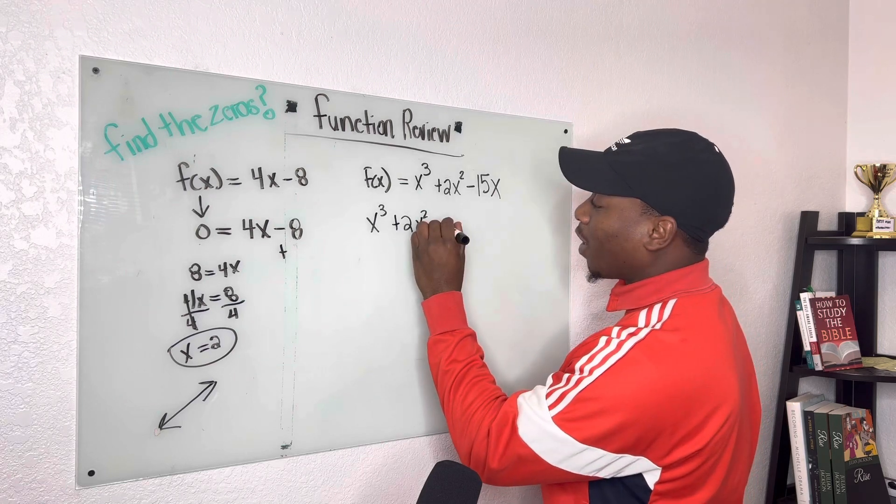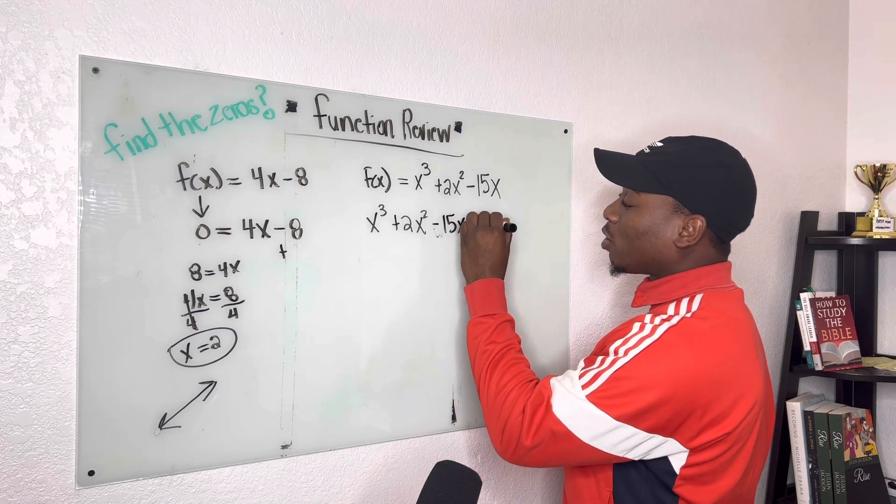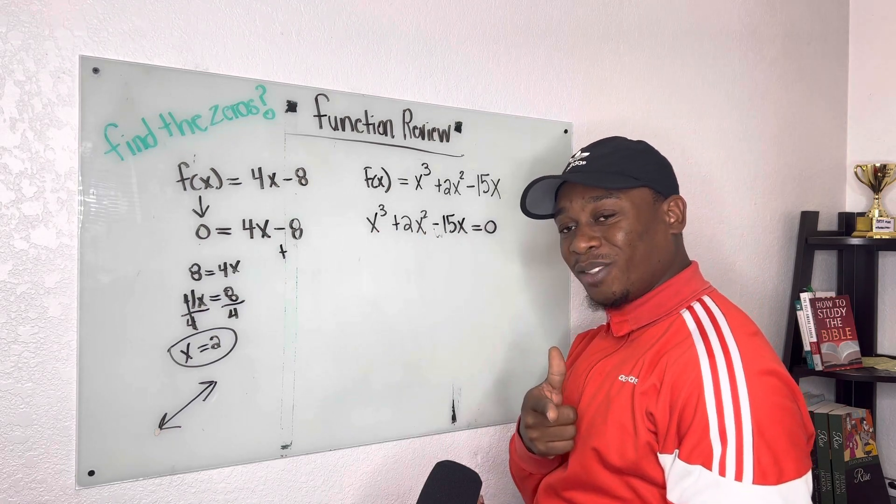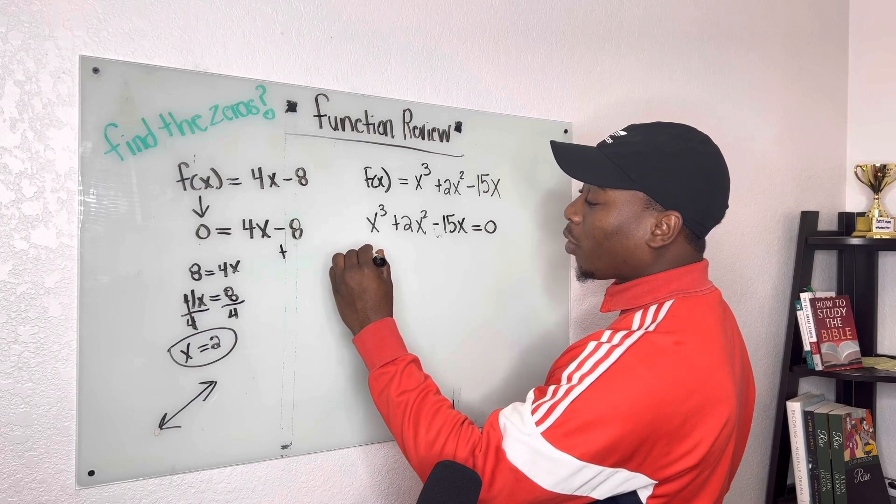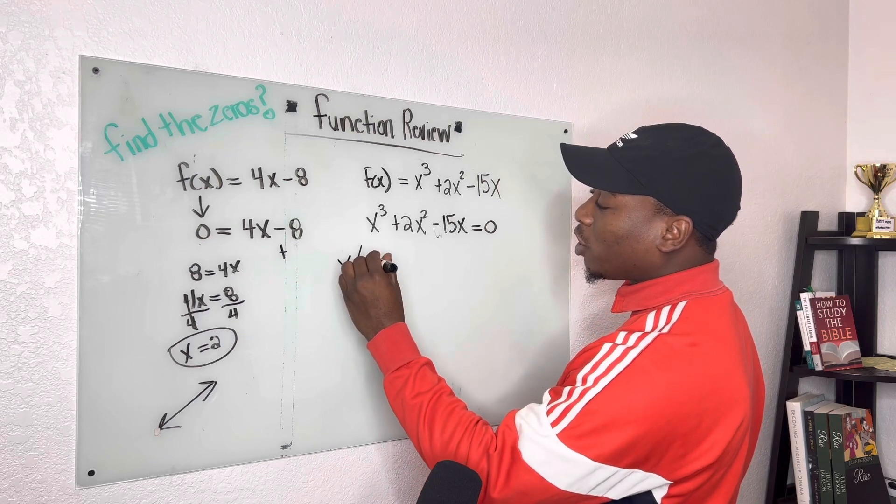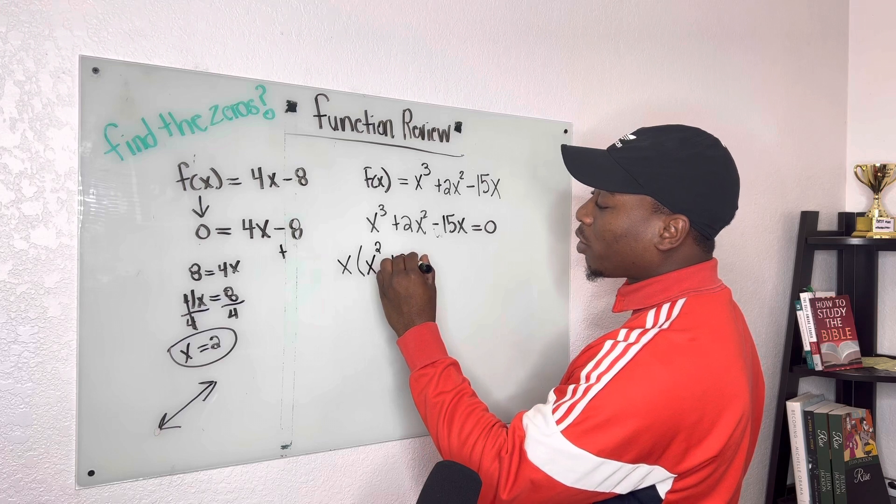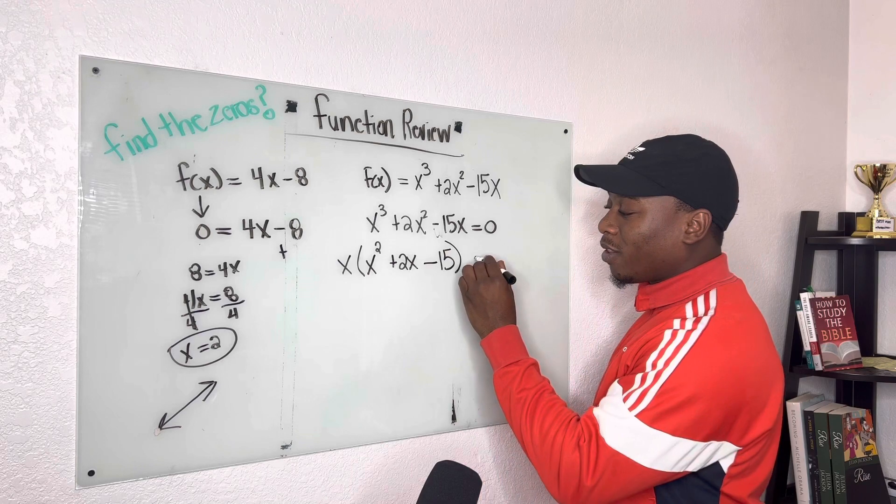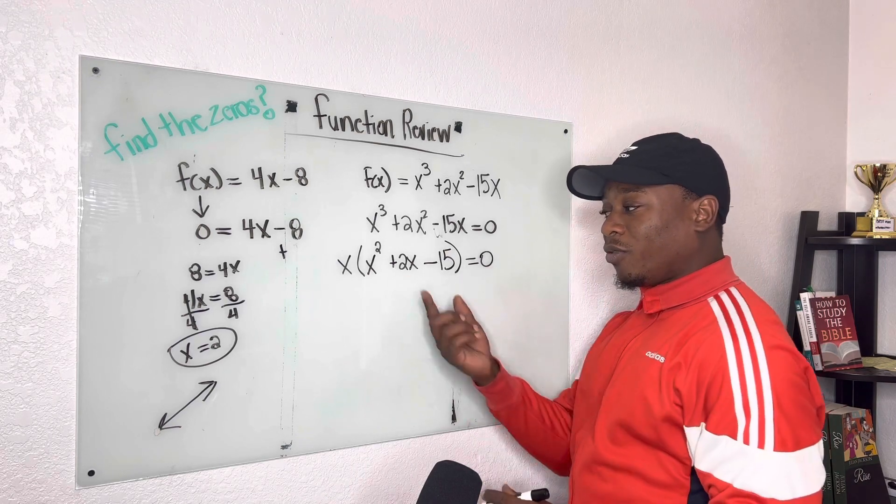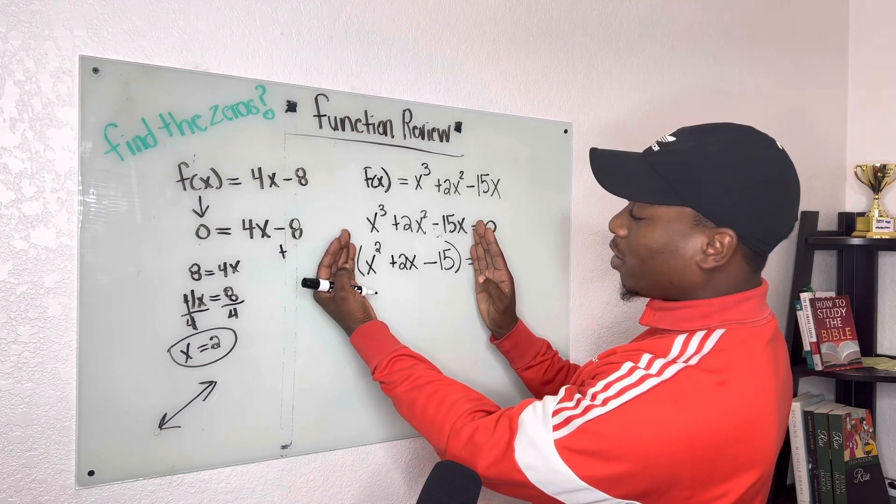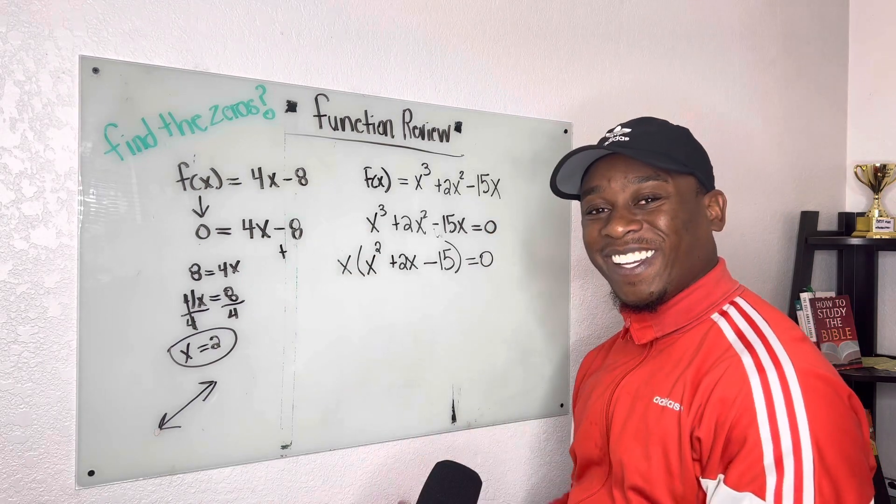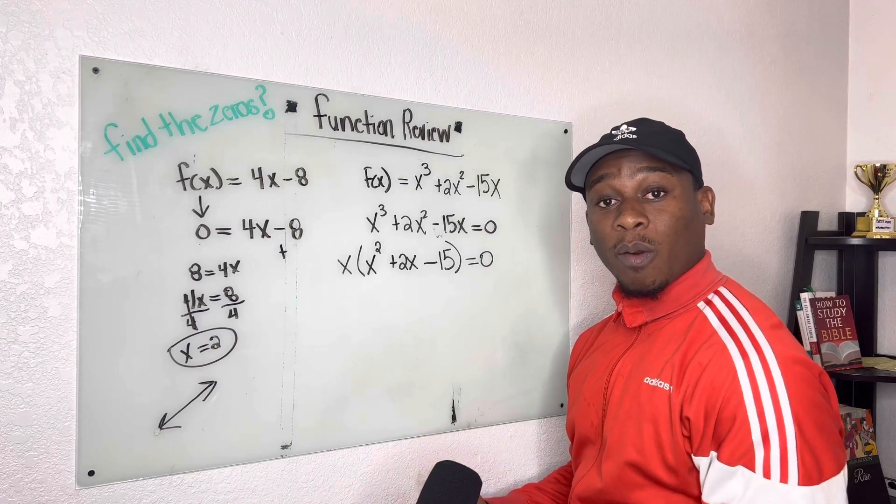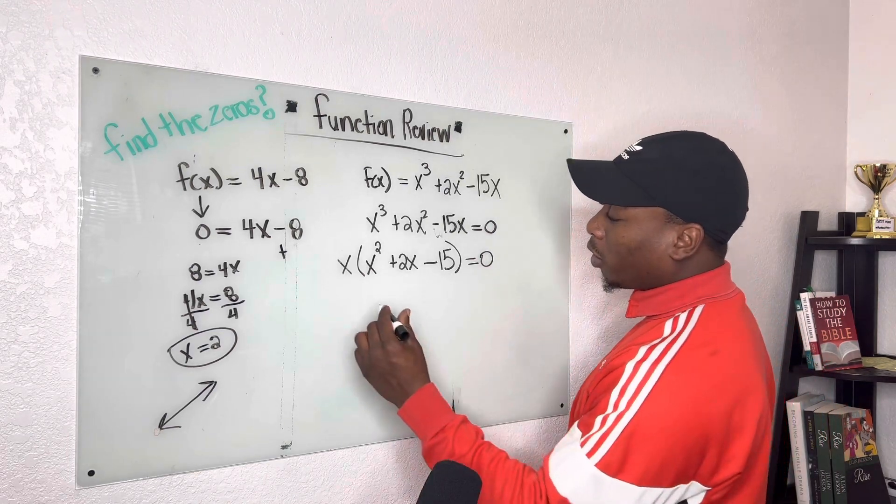we're going to set it equal to 0 just like we did the other two problems. Sorry, that wasn't a plus, it's minus, minus 15x. So we set this equal to 0. And the first thing I'm going to do is I'm going to pull a greatest common factor. Remember that GCF? Yeah. So I pull out an x, and now this is going to change to x to the second power plus 2x minus 15. And this is equal to 0. So now if you look and just focus on what's inside the parentheses, this is so much more easier to factor compared to the beginning stages when we first started with the problem.